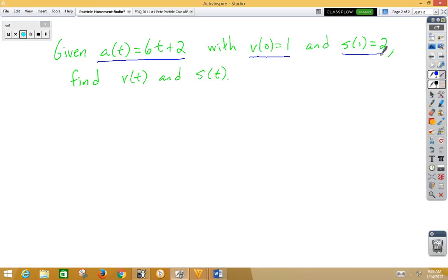So we start off with acceleration, and if we integrate acceleration, that's going to give us velocity. So if I integrate 6t, I get 3t squared, and then integrating 2, I simply get 2t plus c is equal to my velocity function. Plugging in a 0 for t, I would get 0 plus 0 plus c is equal to 1. So now I know that c is 1.